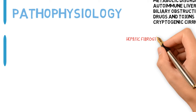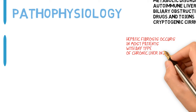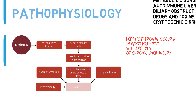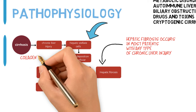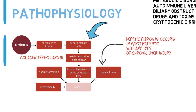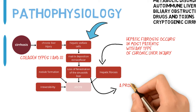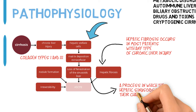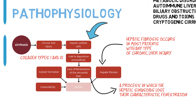Pathophysiology. Hepatic fibrosis occurs in most patients with any type of chronic liver injury and may ultimately evolve into cirrhosis with nodule formation. The central event in hepatic fibrosis is the activation of hepatic stellate cells, which are the major source of extracellular matrix. This leads to an accumulation of collagen types I and III in the hepatic parenchyma and space of Disse. The result of collagen deposition in the space of Disse is termed capillarization of the sinusoids, a process in which the hepatic sinusoids lose their characteristic fenestration, thereby altering the exchange between hepatocytes and plasma.